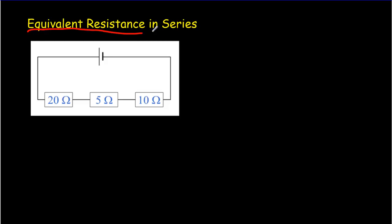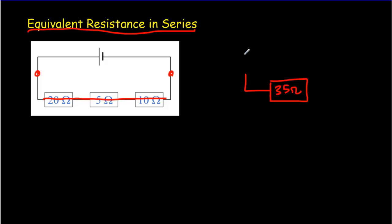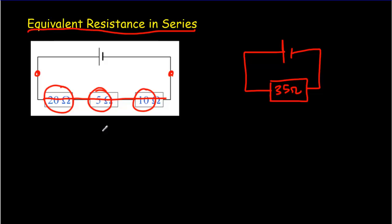Equivalent resistance in series is very simple. In series, the current has to go through each resistor — there's no splitting of the current. We could replace those three resistors, or three blockages to current, by a single equivalent resistance. In this case it would be 35 ohms — just the sum of the individual resistors, 25 and 10. So in series, our formula for equivalent resistance is simply to add up those individual resistors.